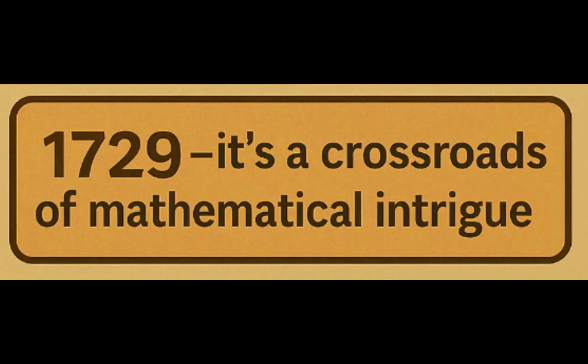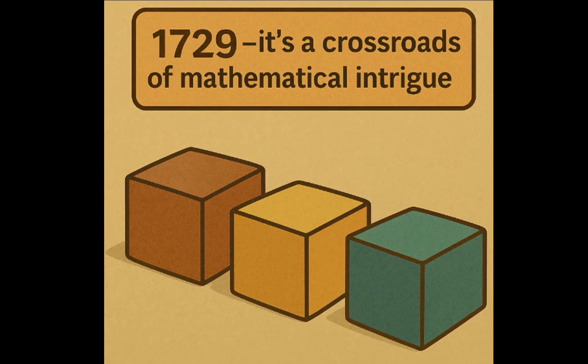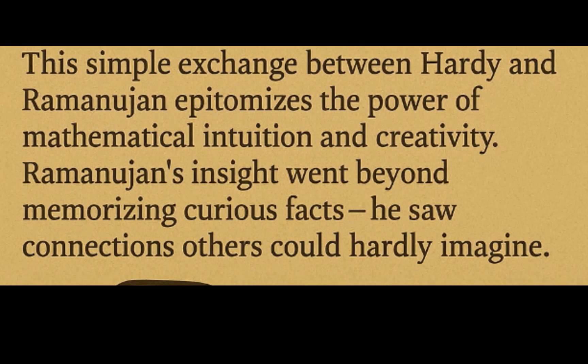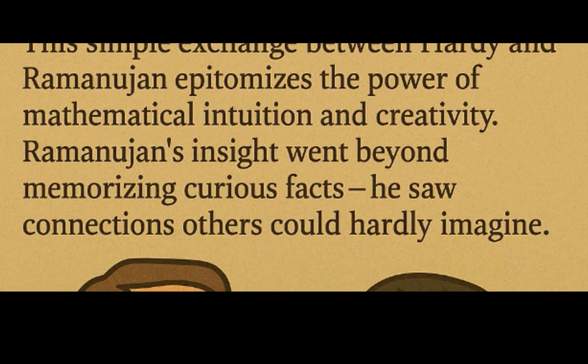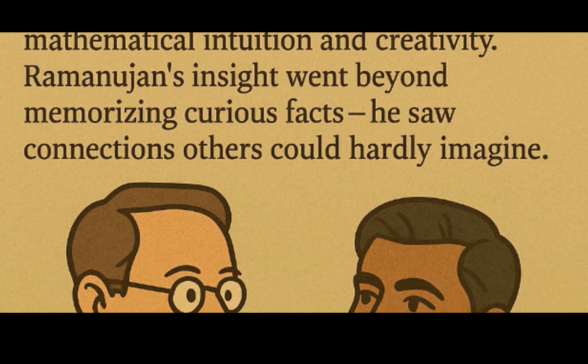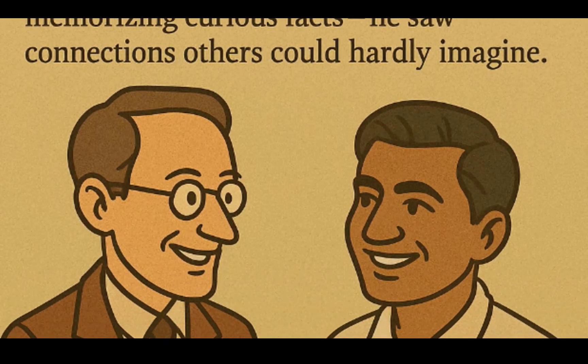1729 isn't just a quirky number, it's a crossroads of mathematical intrigue. This simple exchange between Hardy and Ramanujan epitomizes the power of mathematical intuition and creativity. Ramanujan's insight went beyond memorizing curious facts. He saw connections others could hardly imagine.